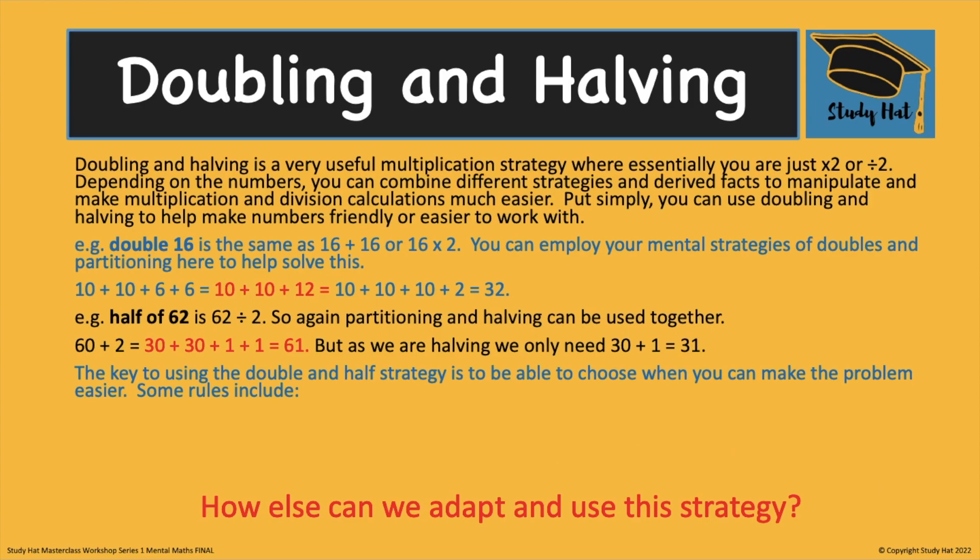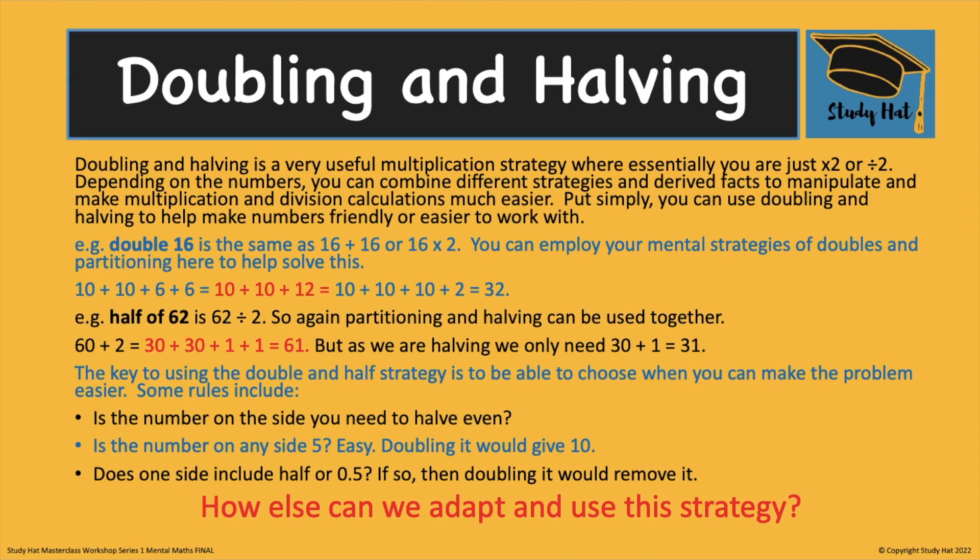When you are using this strategy it's key to remember that you need to decide is it going to work with the problem that's in front of you. For example is the number on the side that you're going to halve an even number? If you're going to halve an even number great if you're trying to halve an odd number yes it will work but does it make the calculation easier? Another rule to ask is either number ending in 5 because ending in a 5 and doubling that number would give you a 10 a multiple of 10 to work with. Does one side include a half or a 0.5 or even 0.25 by doubling you'll be moving that decimal and making it a whole number. Think about these rules when you're trying to decide how and when you should use it.